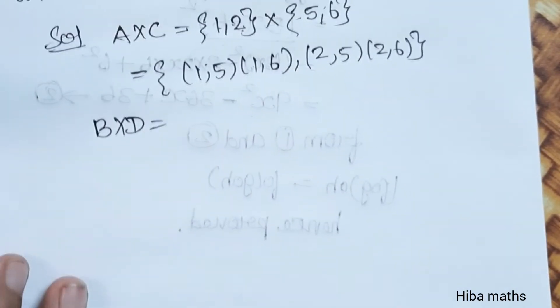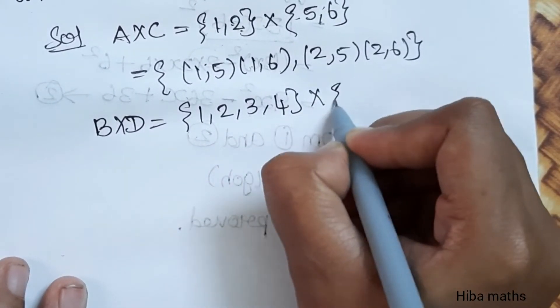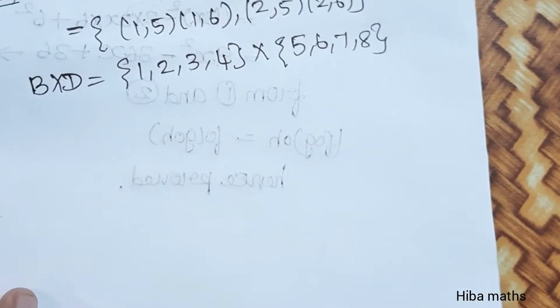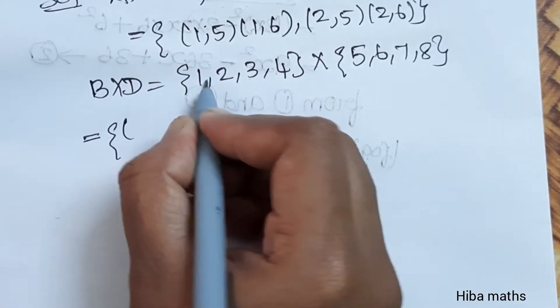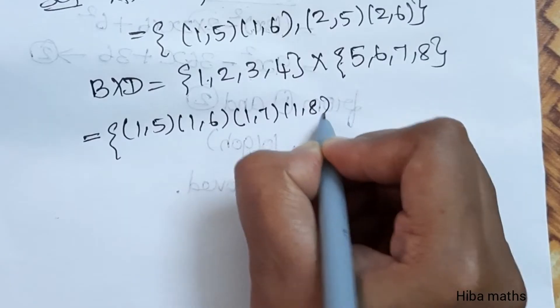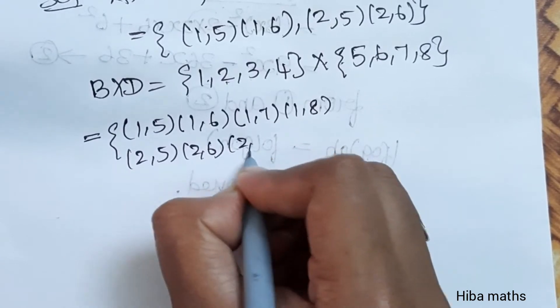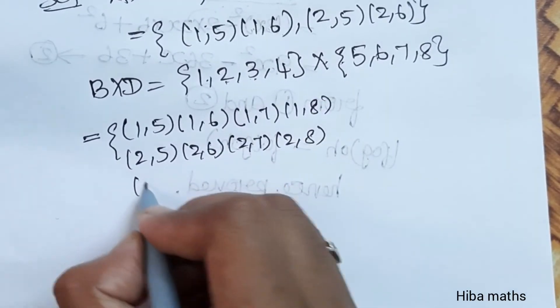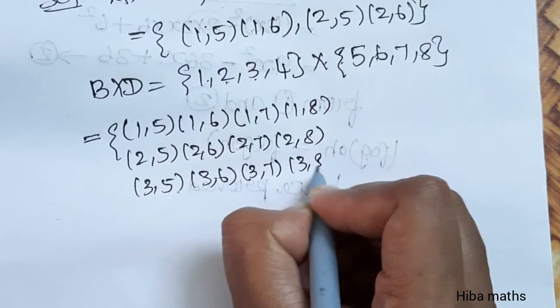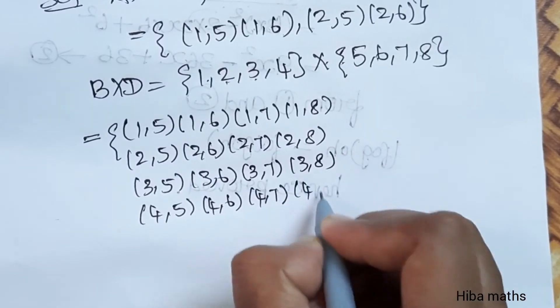Now B×D: {1,2,3,4} × {5,6,7,8} equals {(1,5), (1,6), (1,7), (1,8), (2,5), (2,6), (2,7), (2,8), (3,5), (3,6), (3,7), (3,8), (4,5), (4,6), (4,7), (4,8)}.